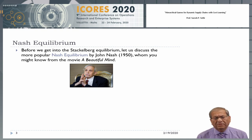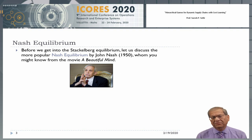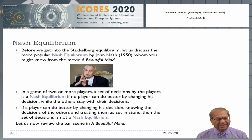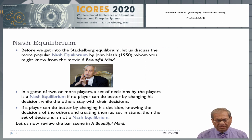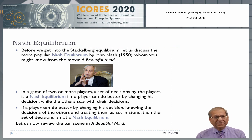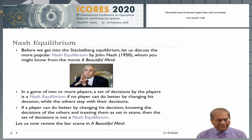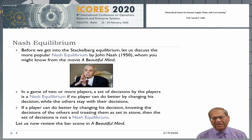Before we go into Stackelberg equilibrium, let us discuss the more popular Nash equilibrium by John Nash, whom you might know from the movie A Beautiful Mind. In a game of two or more players, a set of decisions by the players is a Nash equilibrium if no player can do better by changing his decision while the others stay with their decisions. Alternatively, if a player can do better by changing his decision, knowing the decisions of the others and treating them as set in stone, then the set of decisions is not a Nash equilibrium.